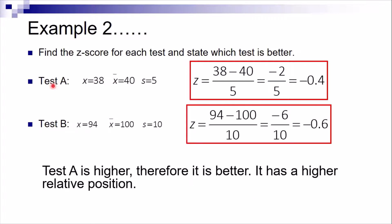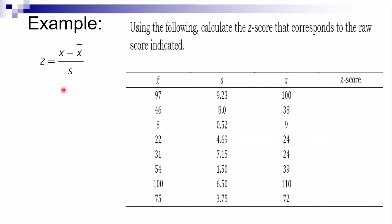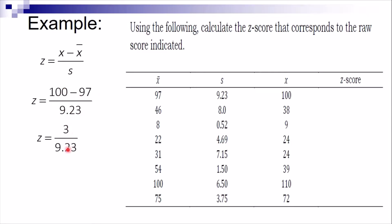Let's have another example where you substitute values into the z-score formula. For item one, we have a score of 100, the mean is 97, and the standard deviation is 9.23. So we compute 100 minus 97, which is 3, divided by 9.23. This gives us approximately 0.33, which is the z-score for item one.